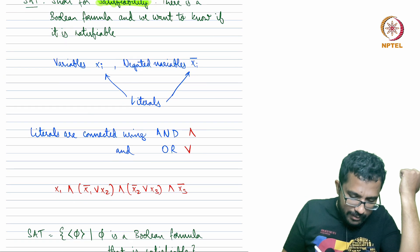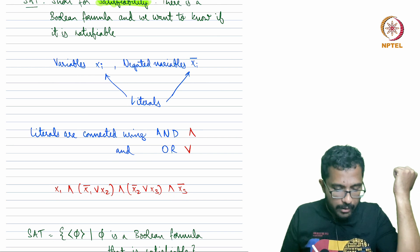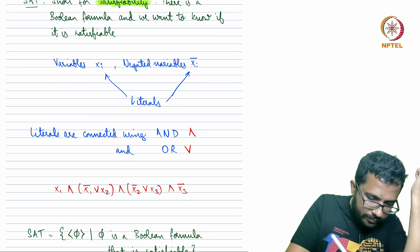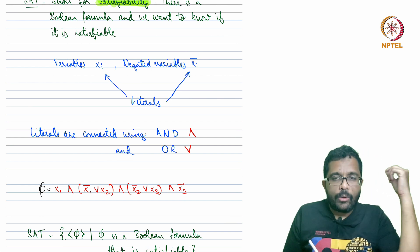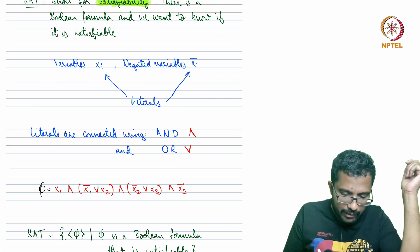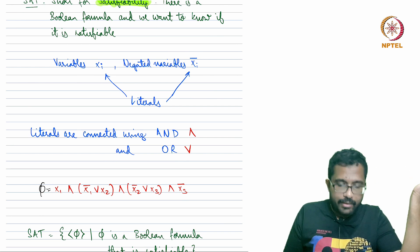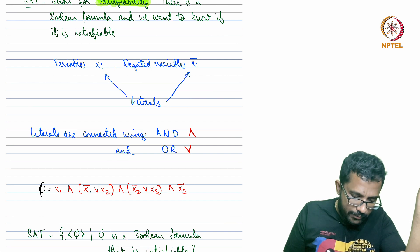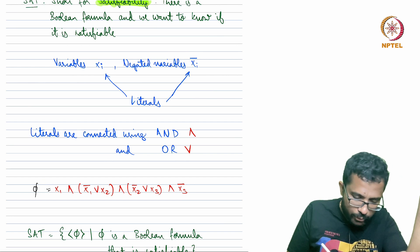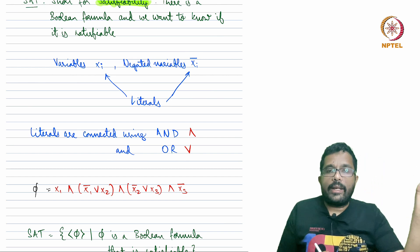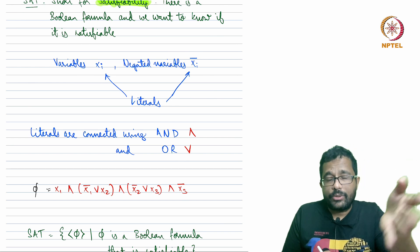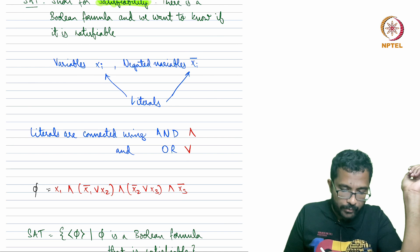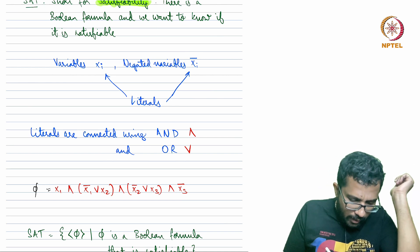Here is an example Boolean formula. Is there a way to assign values to x1, x2, x3 such that the whole formula phi evaluates to true? There are only three variables x1, x2, x3. The formula is an AND of four things.